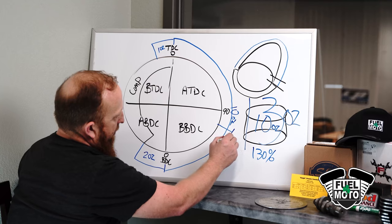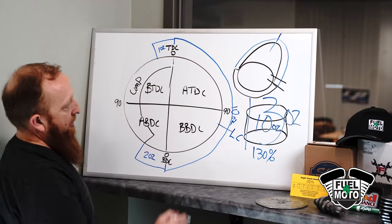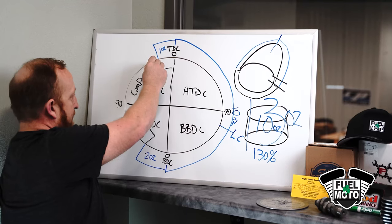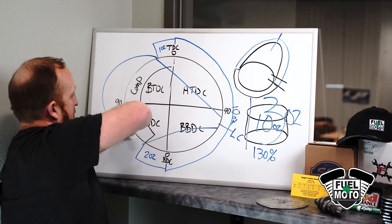So this would be the lobe center of the camshaft represented here. So this would be the opening flank of the cam lobe, the closing flank of the cam lobe, and the base circle.